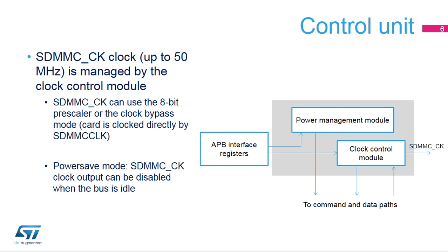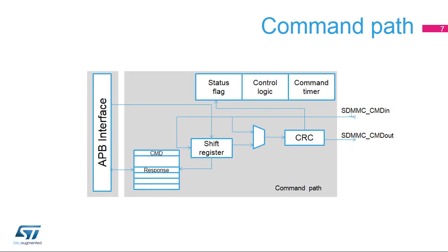The control unit can disable SDMMC-CK generation when the bus is idle. The command path circuit is used to program a command and response sequence. When enabled, the command path shifts out the command index and argument on the SDMMC-CMD pin. After the last payload bit is sent, a CRC-7 is computed and sent out on the bus before generating the end bit. When a response is expected, the command path is configured to SDMMC-CMD-IN and waits for the device response.